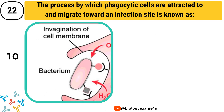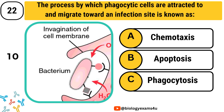Question number 22. The process by which phagocytic cells are attracted to and migrate toward an infection site is known as: chemotaxis, apoptosis, or phagocytosis. The answer is chemotaxis.